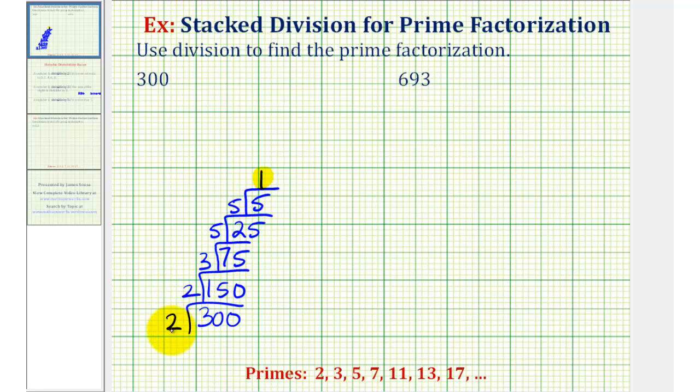Prime factorizations are here on the left. We have two times two times three times five times five is the prime factorization of 300. We may be asked to write the prime factorization using exponents, so we can also write this as 300 is equal to two to the second power times three times five to the second power, or five squared.